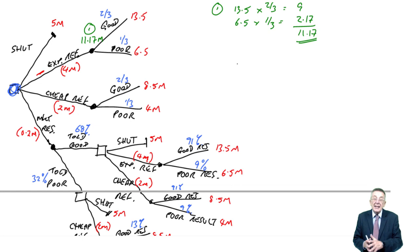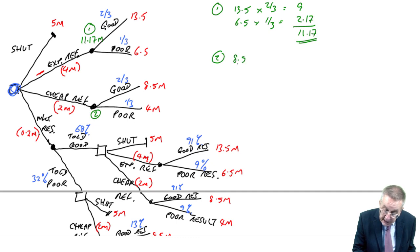But the uncertainty, I can now forget, I've replaced it with the expected value. In a similar way, what about here? Another option was cheap refurbishment. We only need to pay out two million, but we're then uncertain. So, we either get back 8.5 million, or 4 million. The probabilities again, two thirds, one third.